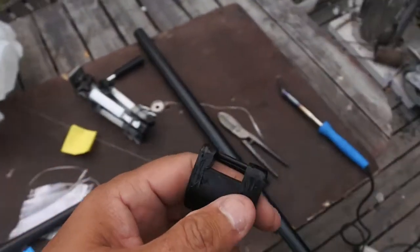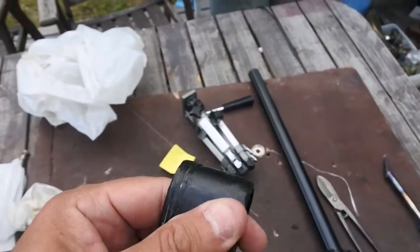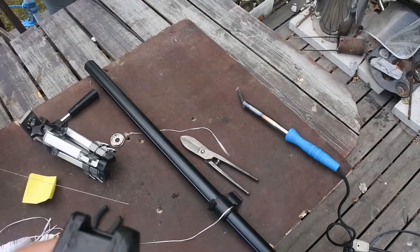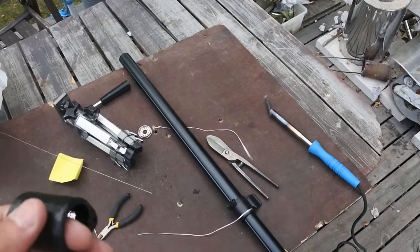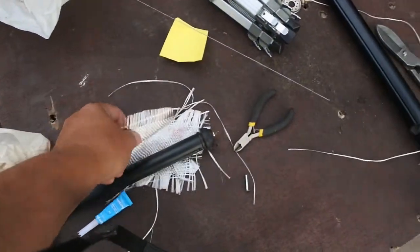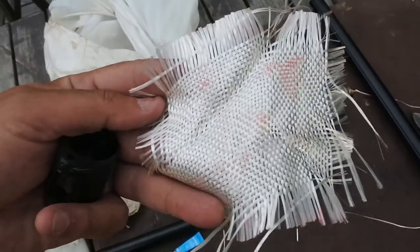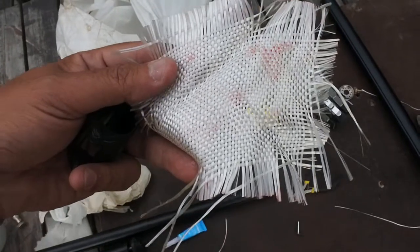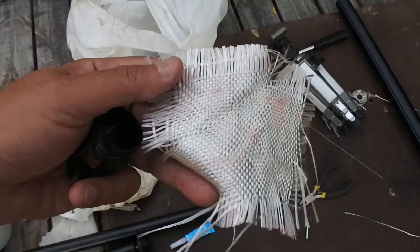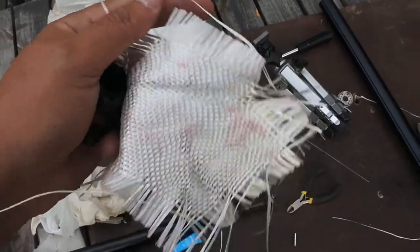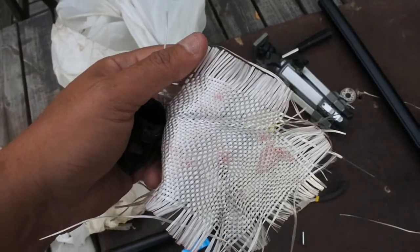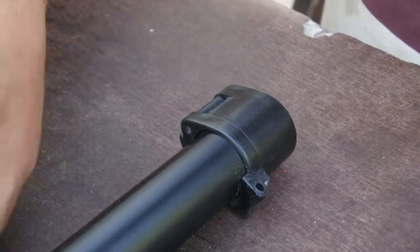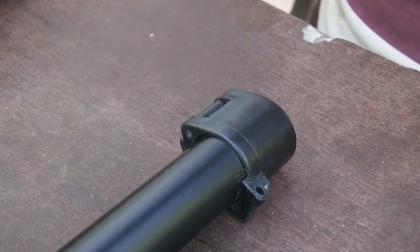I'm using a regular 80-watt soldering iron and glass fiber fabric, the cheapest possible, designed for fixing boats and cars. I pull out individual strands and wind them around the plastic.